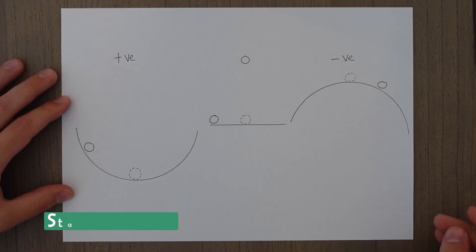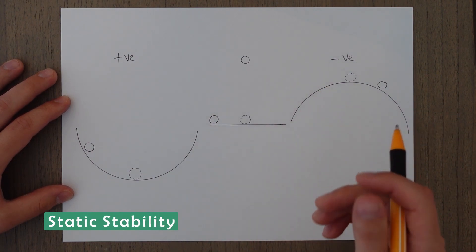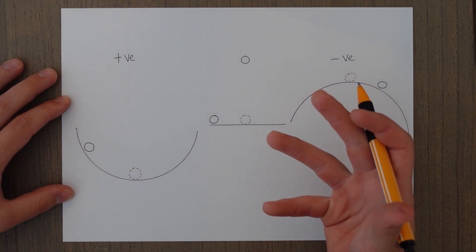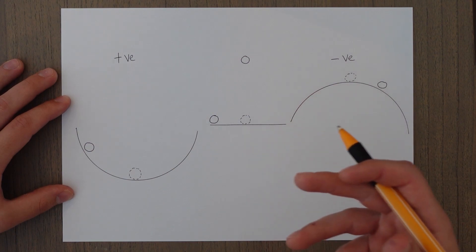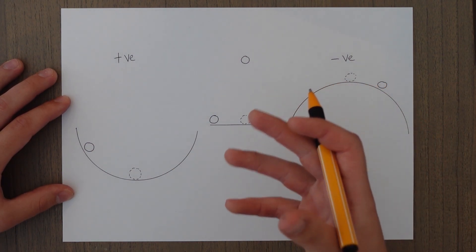I'll be breaking stability down into two classes: the first part looking at the overall concept of stability, and the second part taking a deeper dive into how we achieve stability around the three axes of the aircraft. There are two main types of stability — static and dynamic — and they both can be either positive, negative, or neutral.